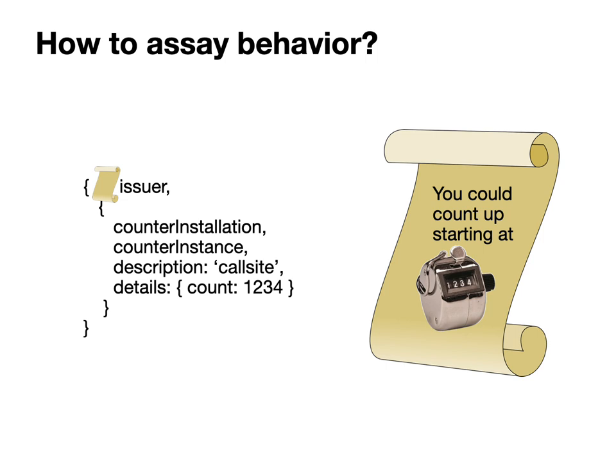Formal verification would be tremendously useful as an element in an overall body of evidence. The description that appears to describe the right starts by naming an issuer — in this case the invitation issuer, an issuer run by Zoe itself for these invitations. The rest of the description includes a counter-installation, which is the static code that's running — the fully linked transitive body of code, transitively linked all the way through.